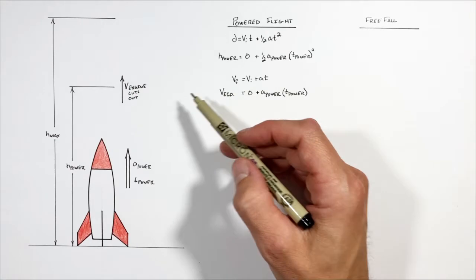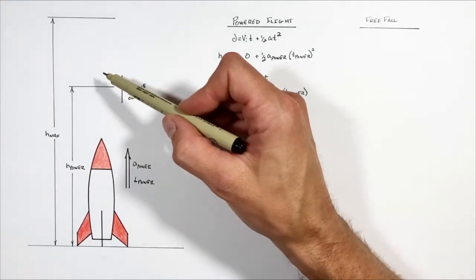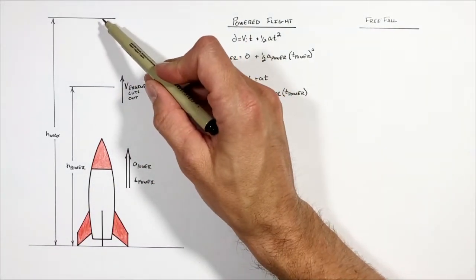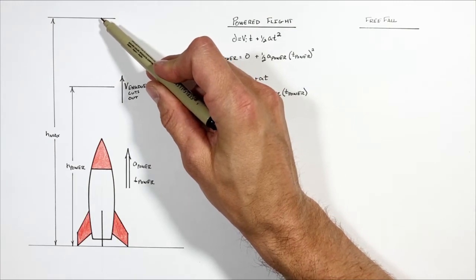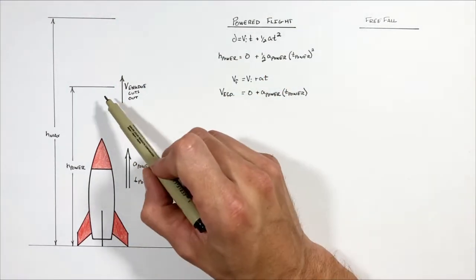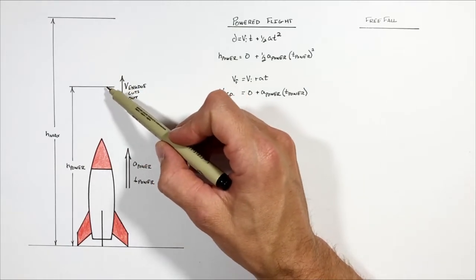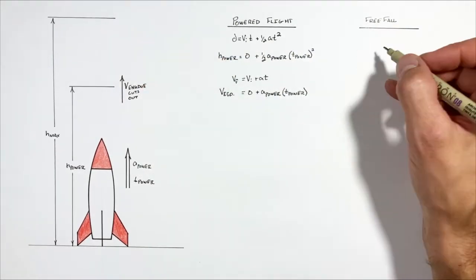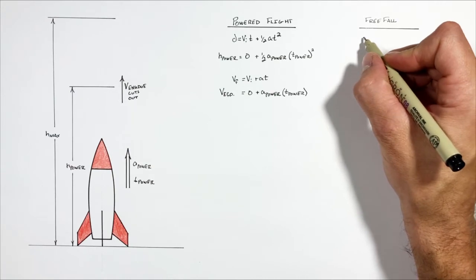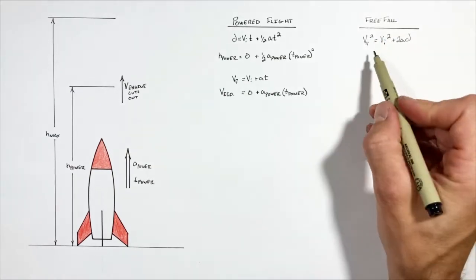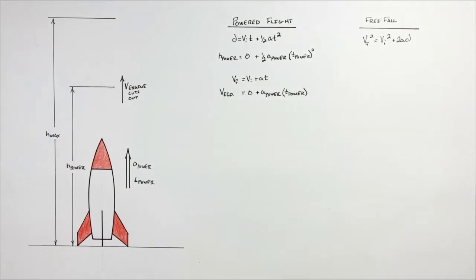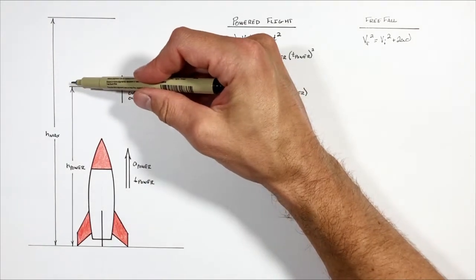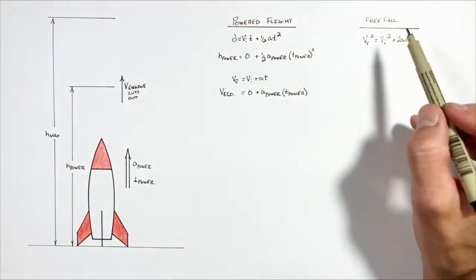Using those two values, I can now look at the second phase of the rocket's motion — coasting upward to its maximum height in what is effectively free fall. To solve for the maximum height, I need a kinematic equation that accounts for all motion from when the engine cuts out until the rocket reaches maximum height. We'll use the equation that relates velocities to acceleration and displacement, and the displacement here is the upward distance traveled while in free fall.